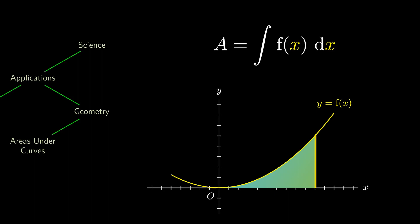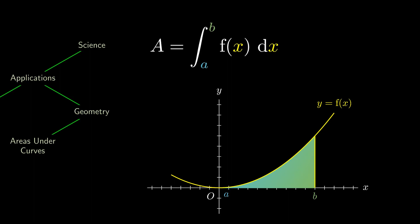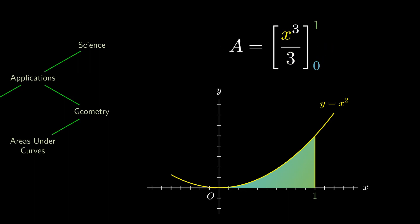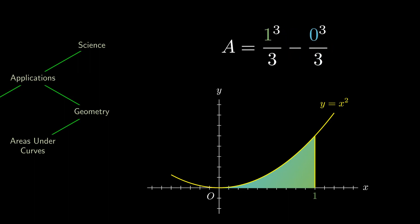If we denote the left and right-hand limits by a and b respectively, the area is strictly speaking the integral from a to b, which we can calculate by integrating f and plugging in these end limits. In this example, we are using the function y equals to x squared, and the area we're calculating is from 0 to 1. We've integrated x squared to get x cubed over 3 just now. We can plug in the limits and obtain an area of 1 over 3.